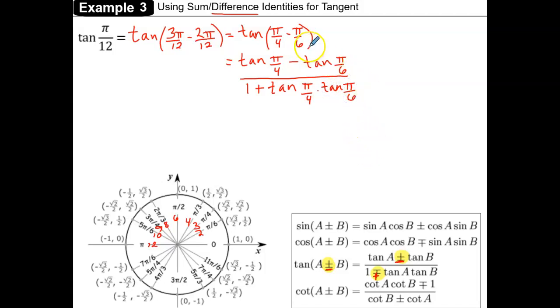Now that we've used the identity, we can go ahead and substitute our values. Tangent at pi over 4—recall the tangents in the first quadrant are 0, then 1, undefined, square root of 3, and square root of 3 over 3. So the tangent at pi over 4 is 1 minus the tangent at pi over 6, which is the square root of 3 over 3.